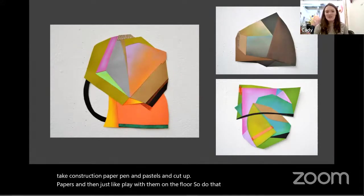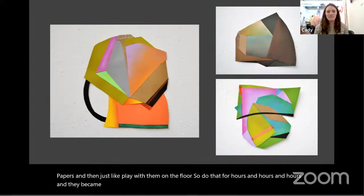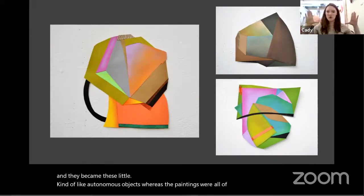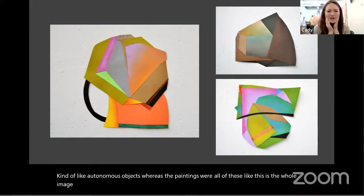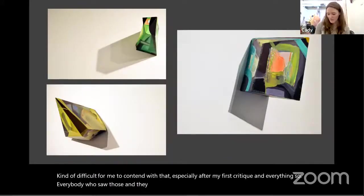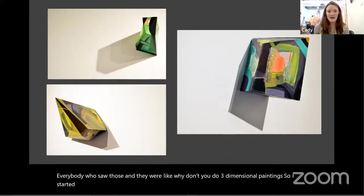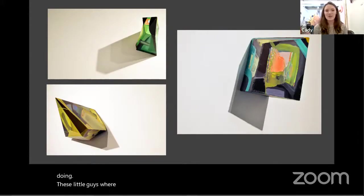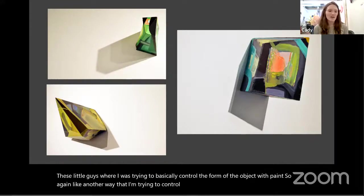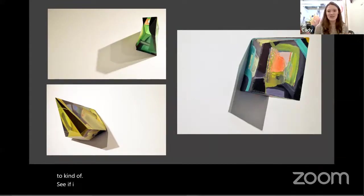These collages became these little autonomous objects, whereas the paintings were all one whole image. After my first critique, everybody who saw those said, 'Why don't you do three-dimensional paintings?' So I started doing these little guys where I was trying to basically control the form of the object with paint — another way of trying to control space with form and color, and also trying to see if I can manipulate how you perceive these objects. A happy accident with these pieces was the shadows they created — actually pretty interesting. After that, I jumped into playing around with insulation foam I had found, joint compound, and regular wall paint combined with bright neon paint.